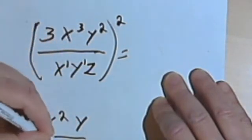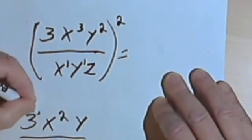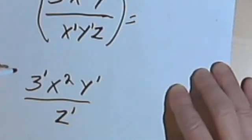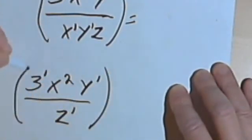And the z is going to stay in the denominator. I'm going to put in little ones as exponents for any place where I don't see an exponent, and now I can raise all of that to the second power.